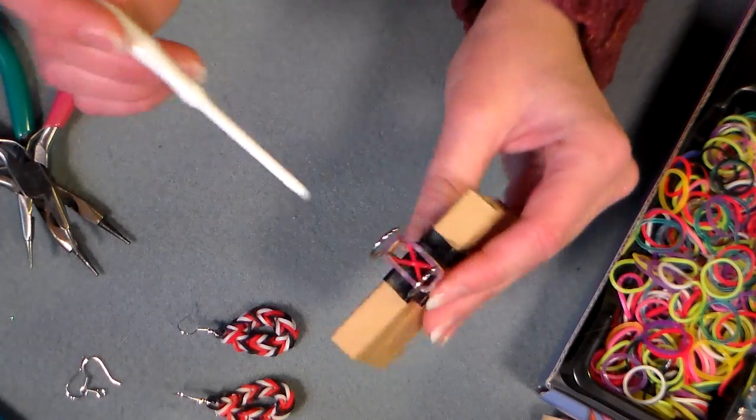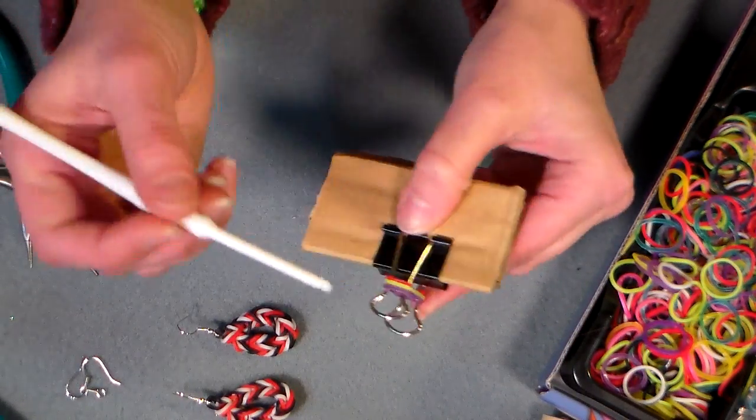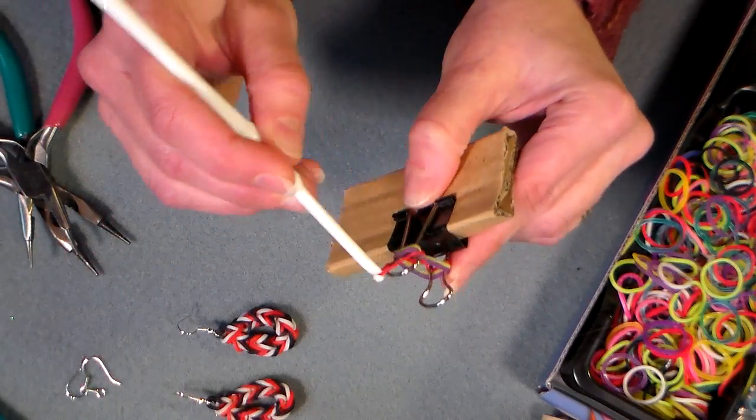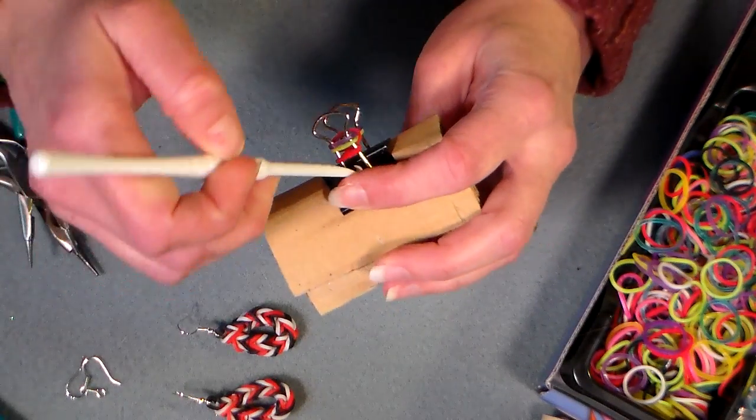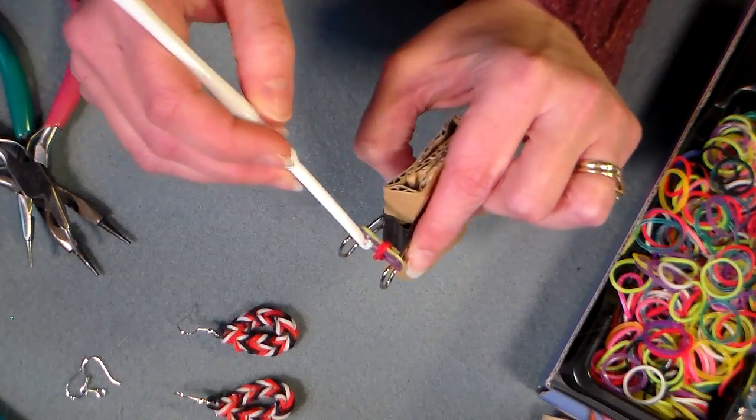Alright, so once you have three on there, your first one's twisted, every one that you add after that is just going on plain. You're gonna use your hook to lift the first one over the other two, so that first twisted one gets lifted over, and that kind of locks the bracelet.